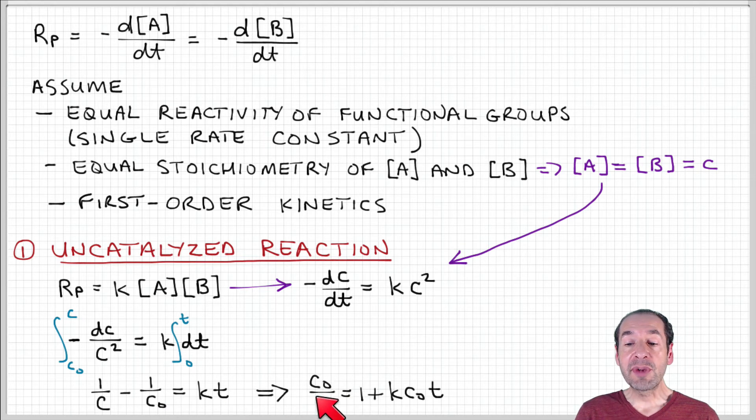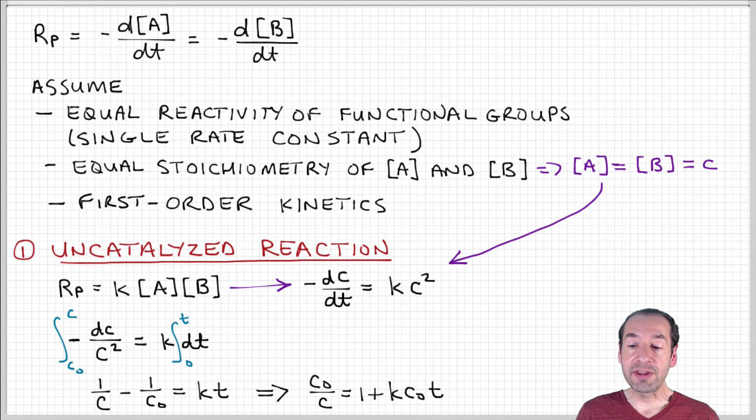I can rearrange to get an expression in terms of the ratio C naught over C, and I see that that is linear with time. Basically, 1 over the concentration of the reagents scales linearly with time.